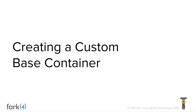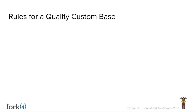The advantage is you can really dial down exactly what's in your runtime before you start building your application. Some rules for building a quality custom base container: first, starting tiny is better. There are a ton of tiny Linux distributions — my personal go-to is Alpine. They tend to have almost nothing in them by default, so you're inheriting almost nothing. They generally scan clean right out of the gate, and it's less container bits to push around — when you pull Ubuntu you're getting a whole full-blown generic environment.